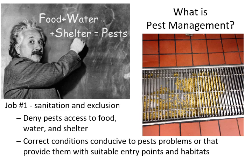With sanitation and exclusion working together, they deny pests access to food, water, and shelter, and correct conditions that are conducive to pest problems or that provide suitable entry points and habitats. Even within the building, restaurants and other food service facilities can do exclusion practices, which I'll show you on the next slide.